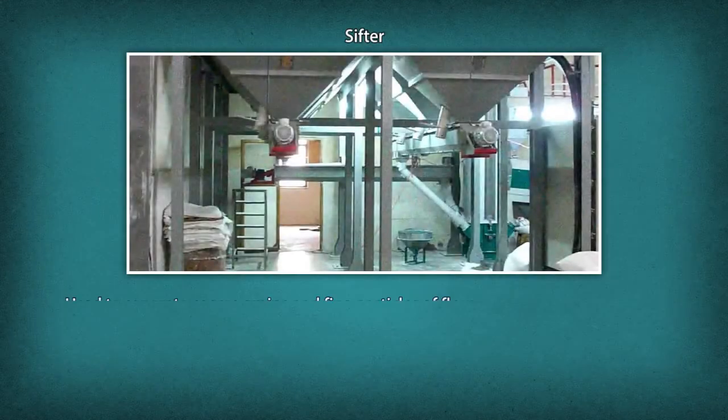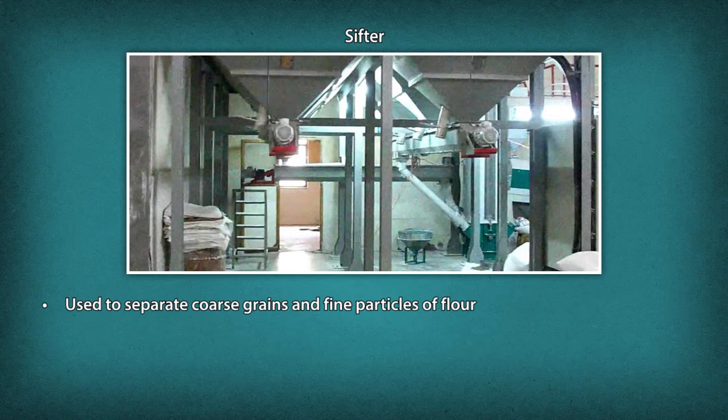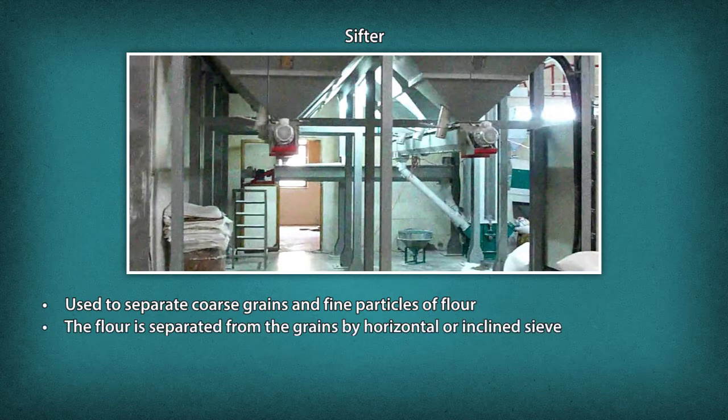Tools and equipment used in the baking process. Sifter: it is used to separate coarse grains and fine particles of flour using flat sieves. The main parts of a sifting machine are the drive mechanism and the set of sieves. The flour is separated from the grains by horizontal or inclined sieve and sifted into three to six groups as per particle sizes.